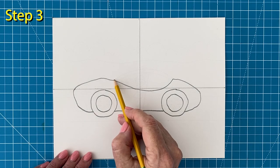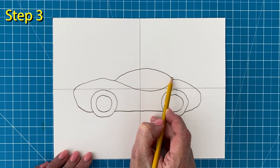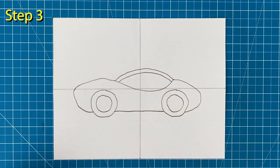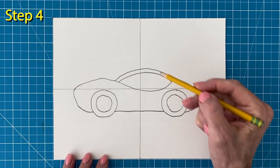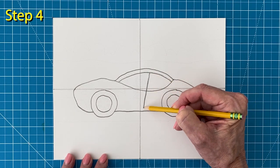Step number three. Draw the roof with two curved lines like this. Step number four. Add a diagonal line for the window and the door.